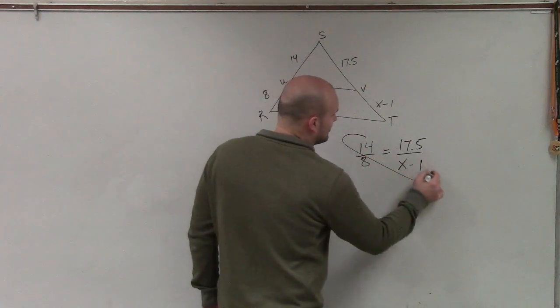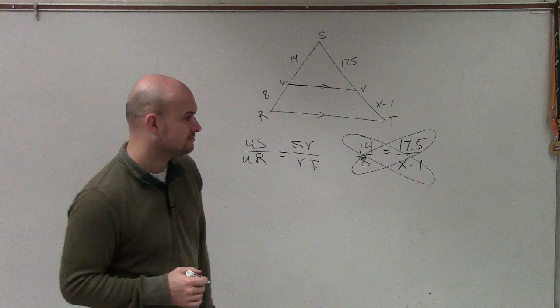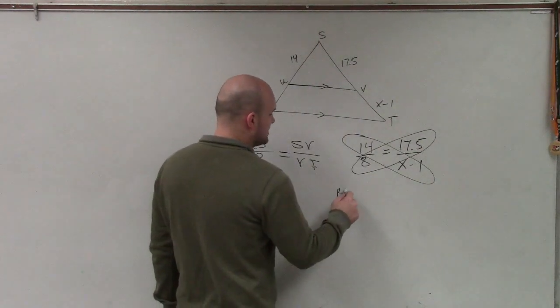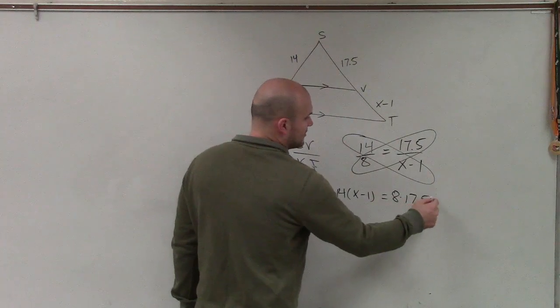So now I can multiply and multiply. I have 14 times x minus 1 is equal to 8 times 17.5.